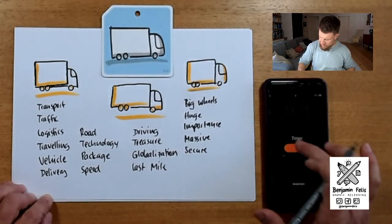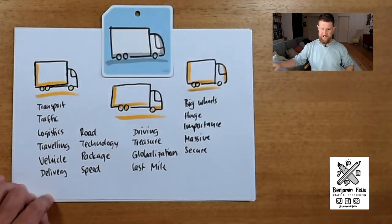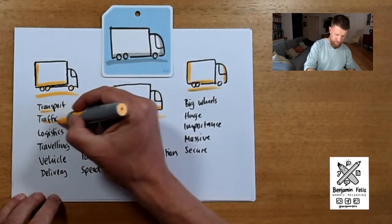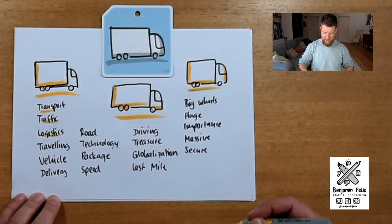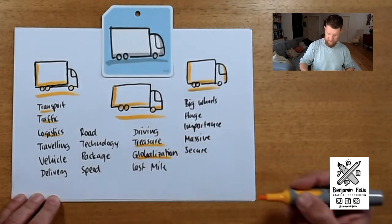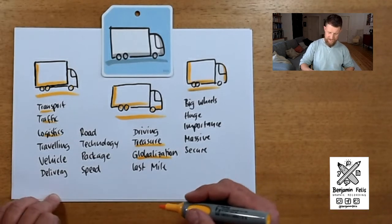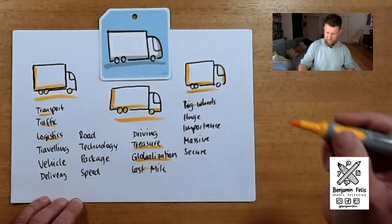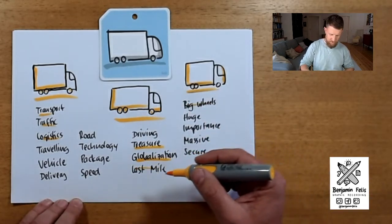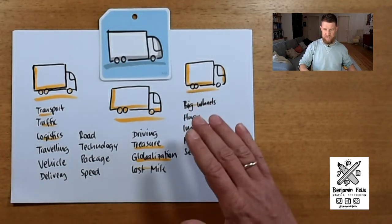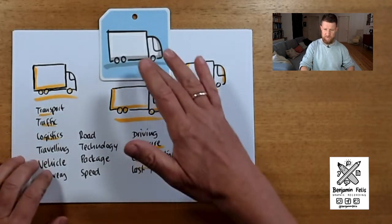The timer's already over. Let's have a look at the terms we found. There are pretty obvious ones, like transport, traffic, and logistics. There are more abstract ones, like treasure or globalization. There are some I don't like as much, like last mile or big wheels. But also secure, speed, delivery, vehicle, and traveling. So there are many expressions we just found for this one symbol.